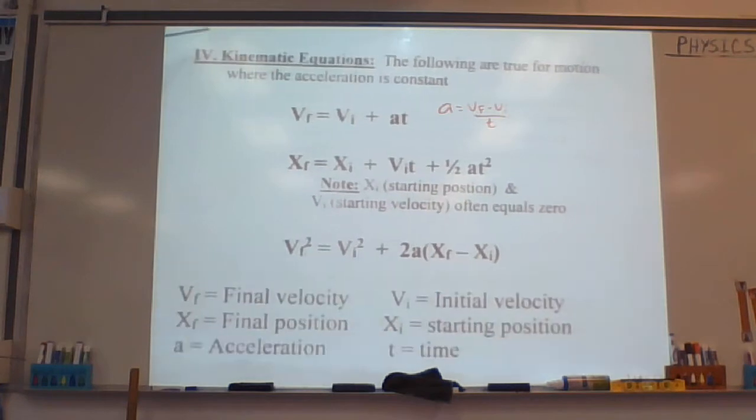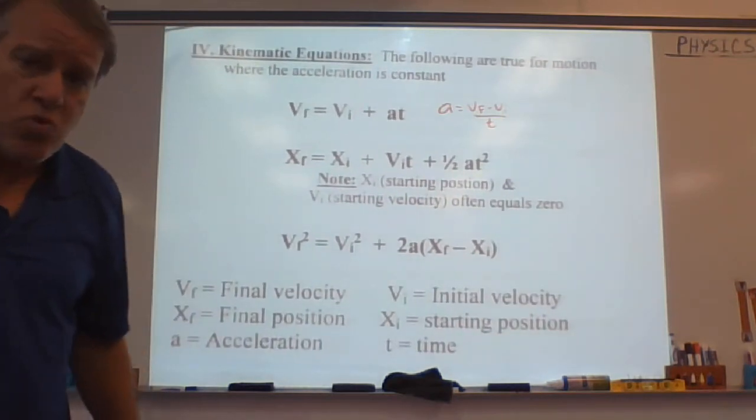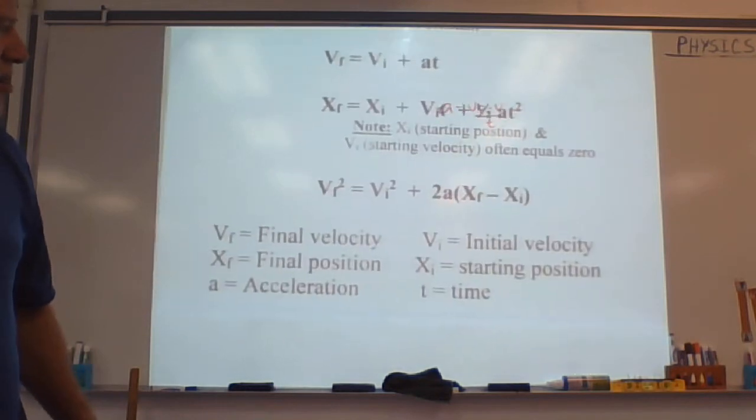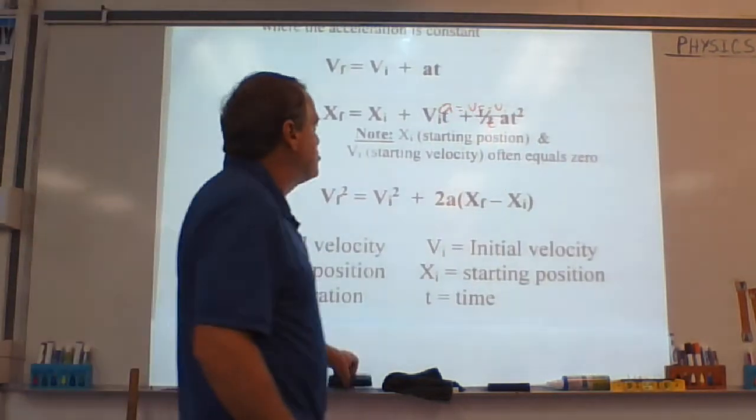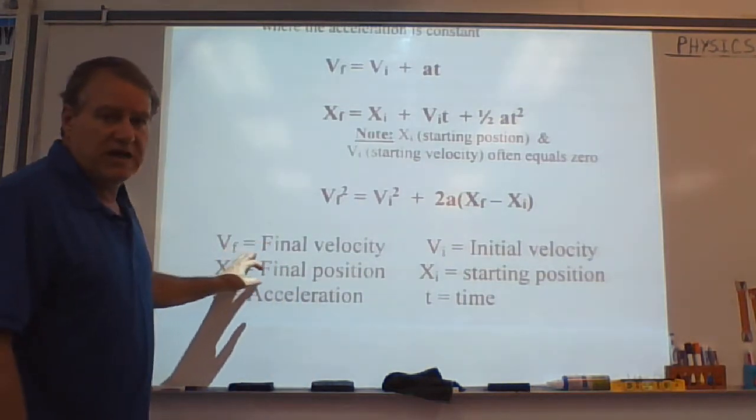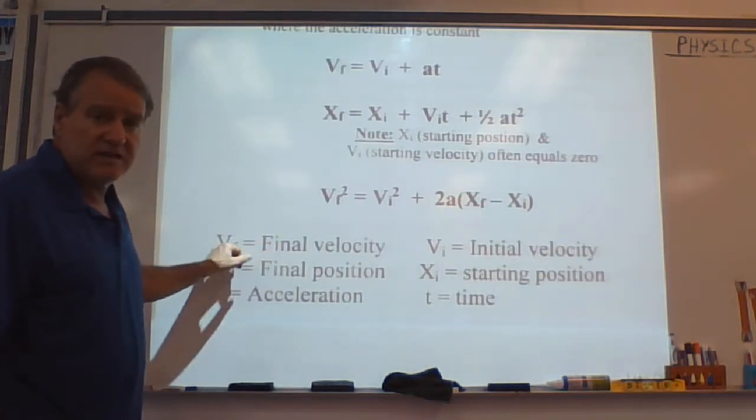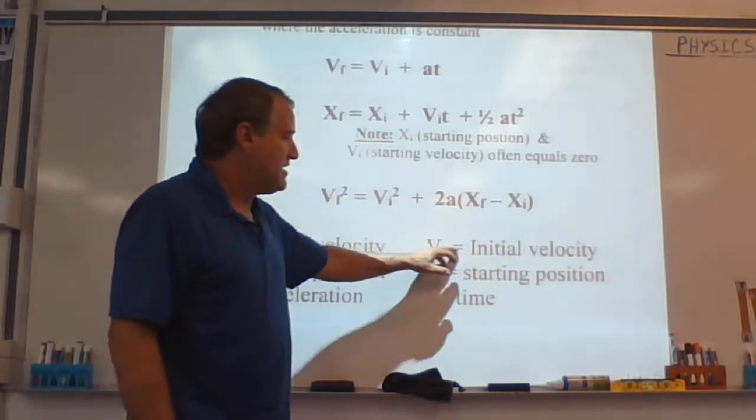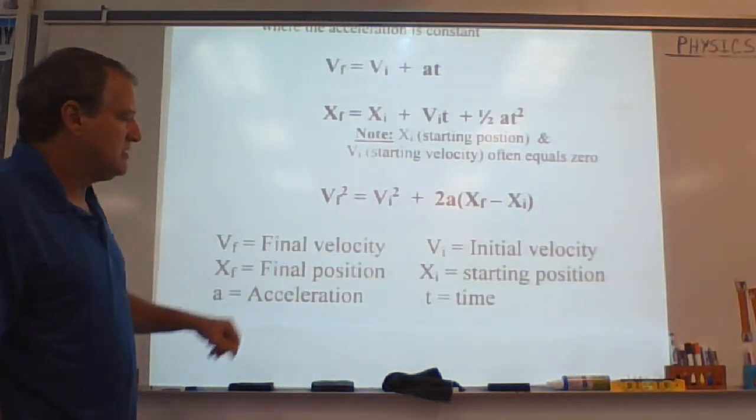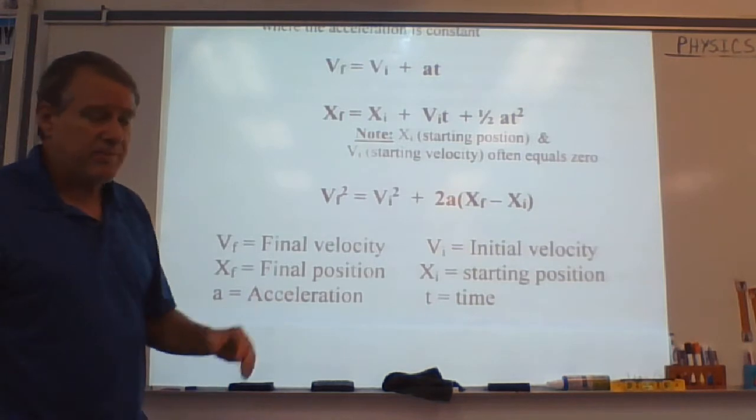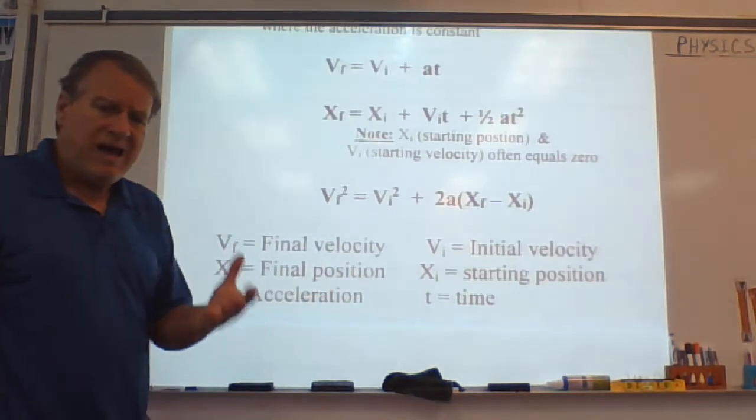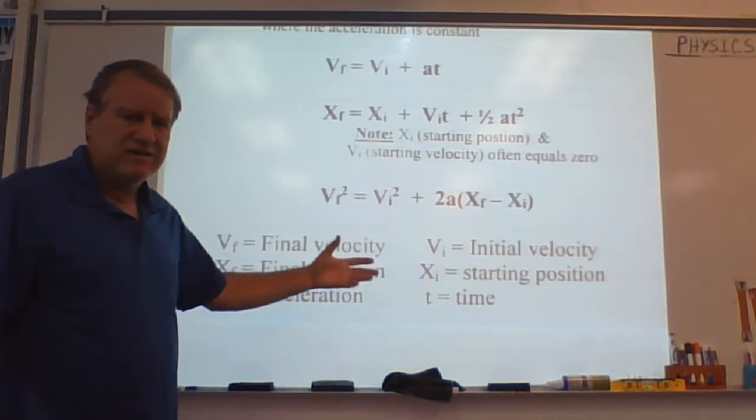Now, one problem the students always tell me is, I don't know what is what. And there's only so many choices here. And so they're a little hard to mess up. So let's take a look at the choices you have. We know that V is a velocity. VF is your final velocity. That's what the F is for. VI is your initial velocity. XF is your final position. XI is starting. And again, that's typically zero. A is acceleration. And T is time. Now, when you look at a problem, how do you know which one is one of these here?